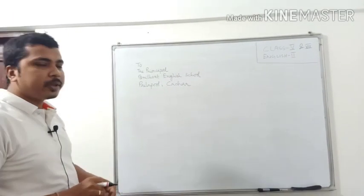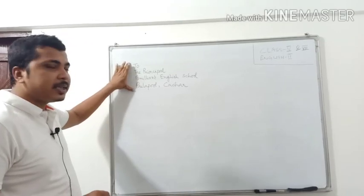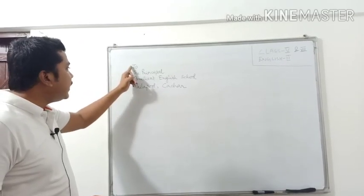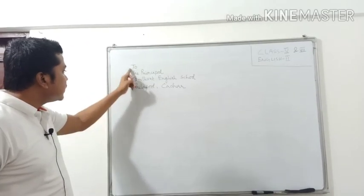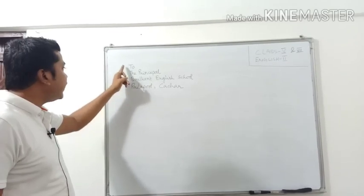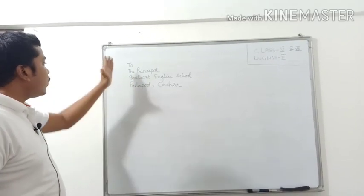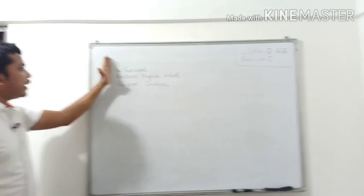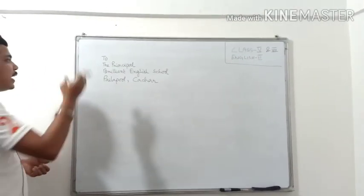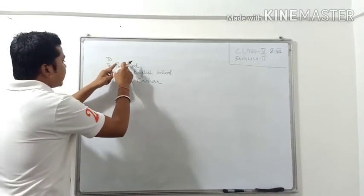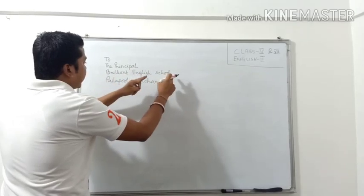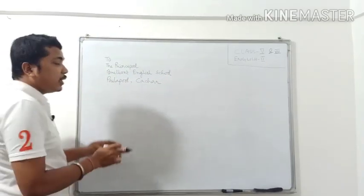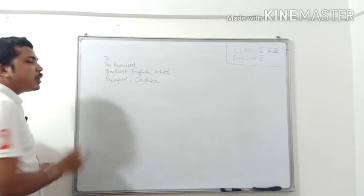Now dear students, have you noticed something in these three lines, four lines? What I have done? I have maintained this systematic way. I have maintained this line. So whatever lines you have to write, you have to write in a proper way. You cannot write to here, then start the principal here, then address of the school here. You have to maintain the proper order of the line.